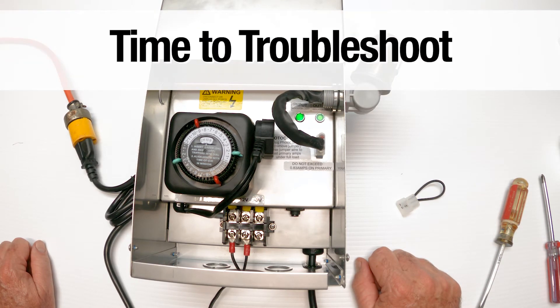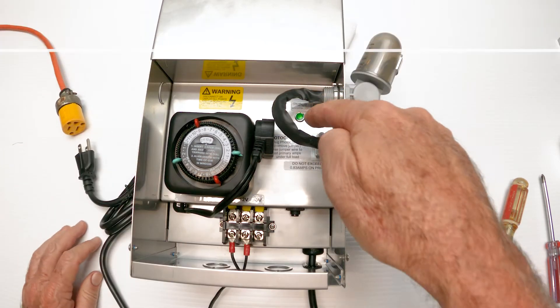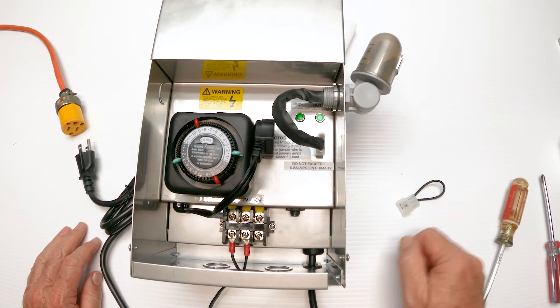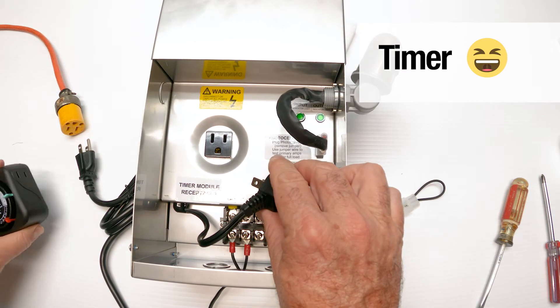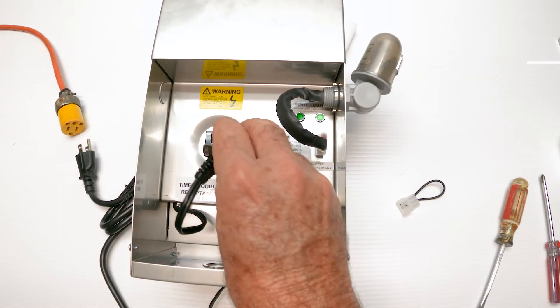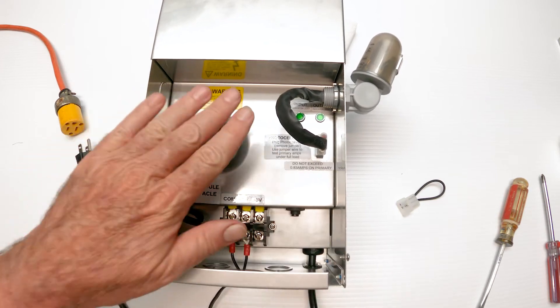So to find the problem, we want to remove variables. I'm going to unplug the unit just for safety reasons. There's no power coming in and I'm going to remove variables. The first variable I'm going to remove is this timer. I'm going to take the plug and plug it in the socket. The timer is gone.